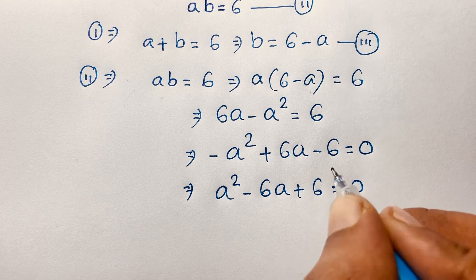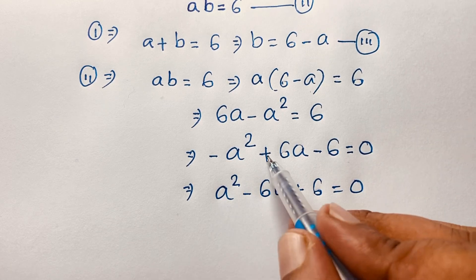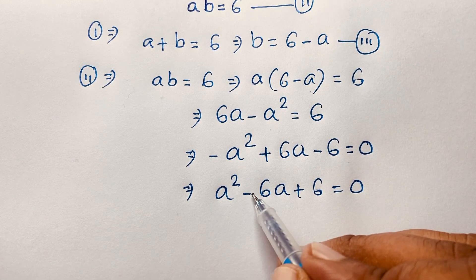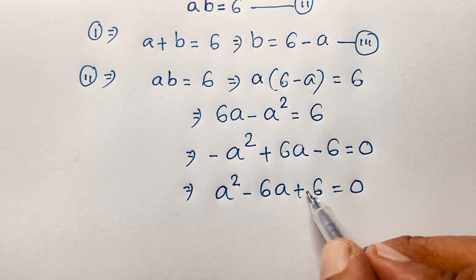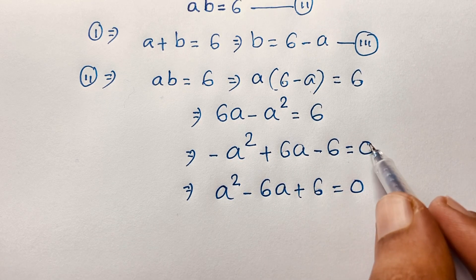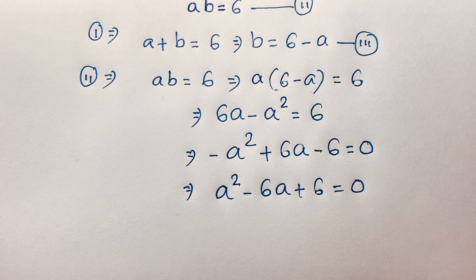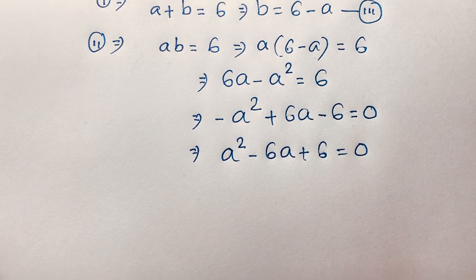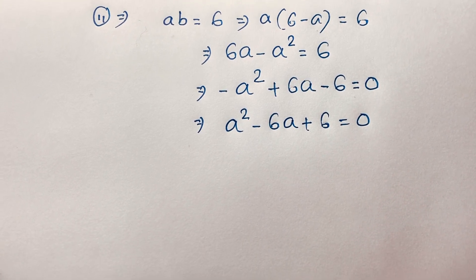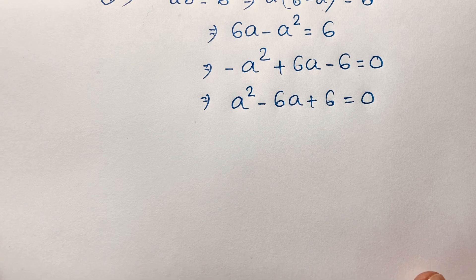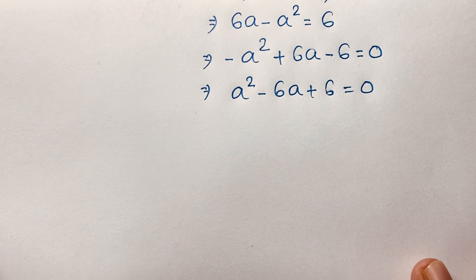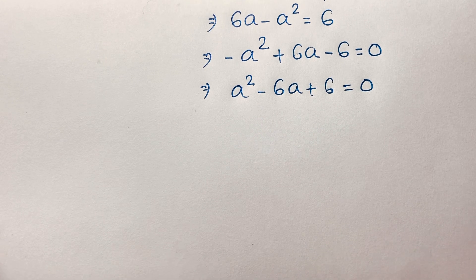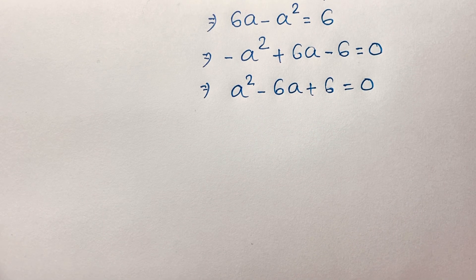If I multiply both sides by negative 1, it will be positive A squared minus 6A plus 6 is equal to 0. Because minus times minus is plus, plus times minus is minus, minus times minus is plus, and 0 times something is 0. So we find here a nice quadratic equation: A squared minus 6A plus 6 is equal to 0.